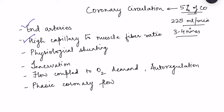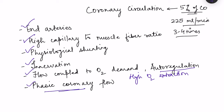There is also presence of physiological shunting. Then we will look at the innervation of the heart and how it is important for regulation of coronary circulation. Flow is directly coupled to oxygen demand because the heart has high oxygen extraction. We will also cover autoregulation of coronary circulation and phasic coronary flow — the difference in coronary flow during systole and diastole.